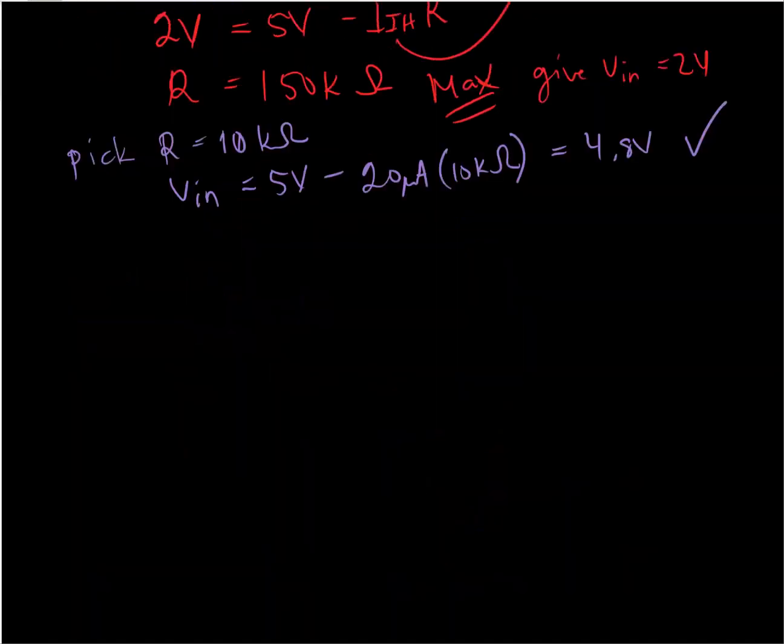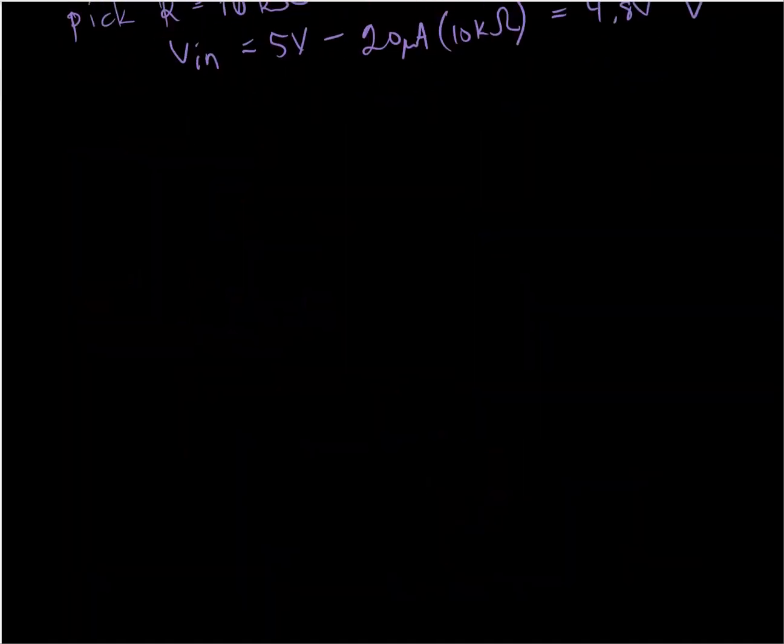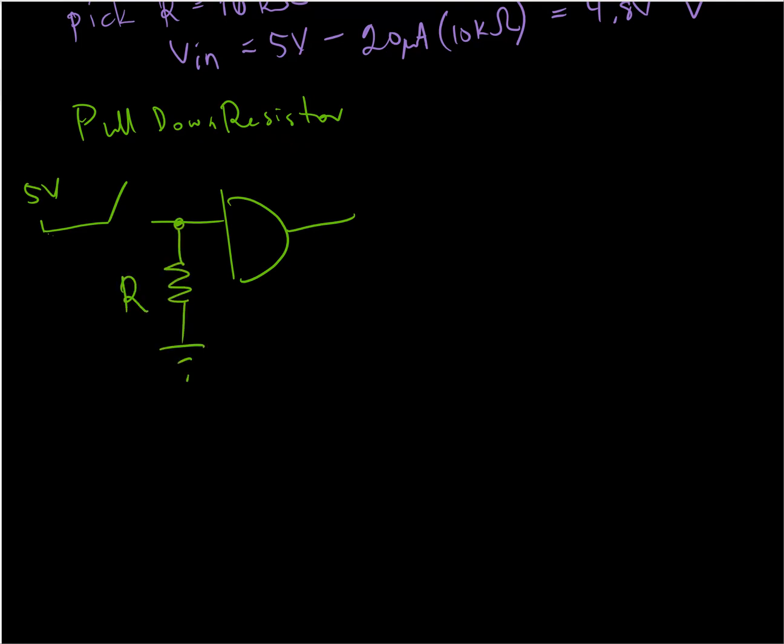The other way we could have arranged it is with a pull-down resistor. The switch is going to the gate like that, and this end of the switch is actually connected to five volts, and the gate side of the switch is now connected through a resistor to ground. So now when the switch is open, the chip is getting a low input, and the current through this resistor is now actually coming out of the chip and getting grounded like this.